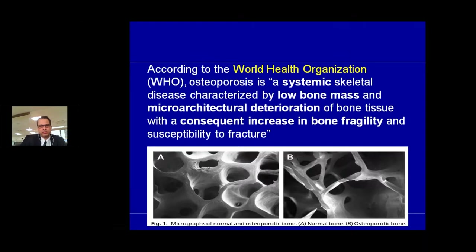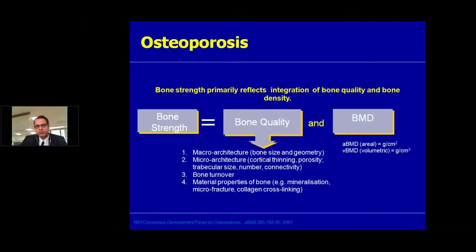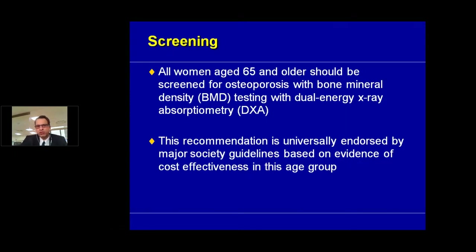Osteoporosis is a disease characterized by low bone mass and deterioration in the micro-architecture of the bone, which results in weakening of the bone tissue. Bone strength is equivalent to bone mineral density along with bone quality. It's typically women who are most affected — women in the post-menopausal age group tend to have deterioration in their bone quality and catch up with osteoporosis much earlier than men.